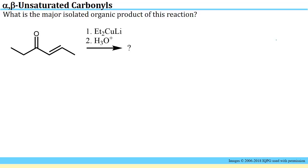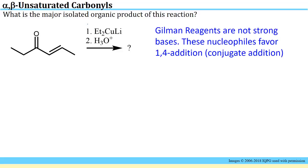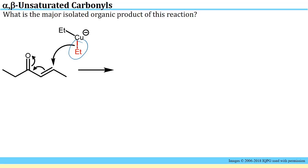What happens if we use a Gilman reagent instead? Gilman reagents are not strong bases — they are utilized primarily because they are more stable than Grignard reagents, making them safer to handle. In the case of reactions with alpha-beta unsaturated carbonyls, these nucleophiles favor 1,4 addition. If we think about the ethyl group with its bonding electrons serving as a nucleophile to attack the fourth position in the conjugated system, the arrow-pushing mechanism pushes the negative charge onto the oxygen, an electronegative atom where it is more stable.